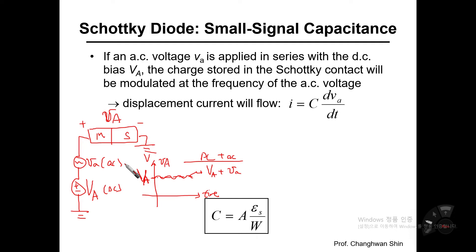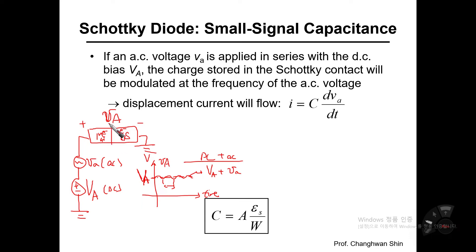The AC voltage v_a is applied in series with the DC bias V_A. Charges stored in the Schottky contact would be modulated and varied at the frequency of the AC voltage. Frequency means how fast the AC signal is moving up and down. With higher frequency, the charge particles are modulated at a faster pace; with lower frequency, the degree of movement of charges across the MS contact would be very slow.